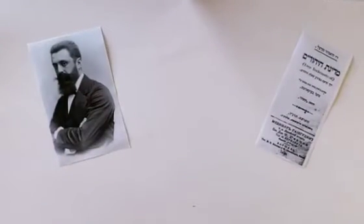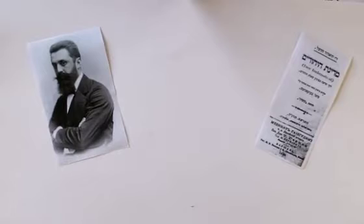The book was called The Jewish State, written by Benjamin Zeheb Theodor Herzl. The subheading was an attempt at a modern solution to the Jewish question.